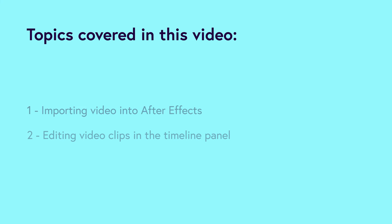However, when we bring in video that has been exported from other programs, we still need to edit it in After Effects to a certain degree. In this video, I'll be showing you an example of how to edit video simply in After Effects. So in this video, we're going to be covering the following topics: importing video into After Effects and editing video clips in the timeline panel. So first, I'll show you what we are going to create and then I will show you how to do it. Let's get into it.